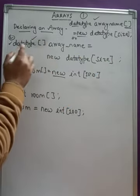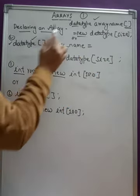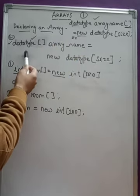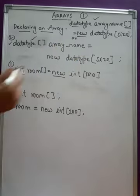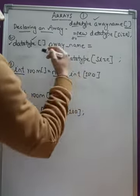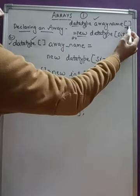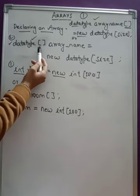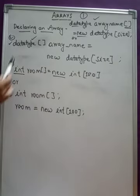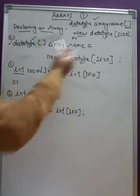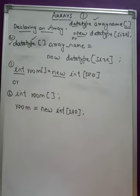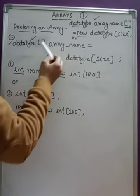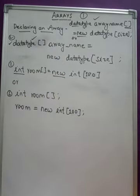The second way is not much different. The only difference is the placement of the square brackets — in the first way they are placed after the array name, while in the second way they are placed before the array name. Both forms are valid and you can follow either one.